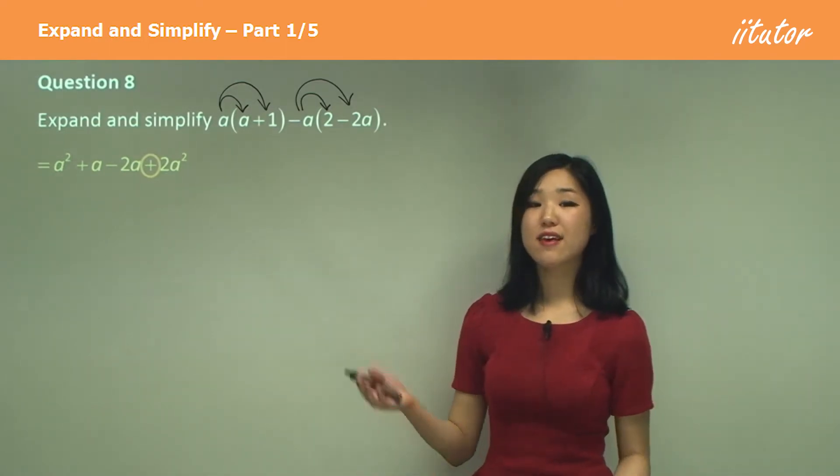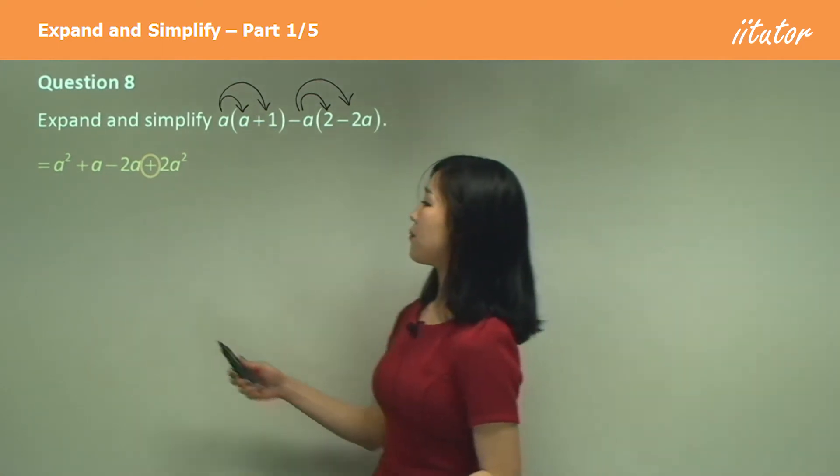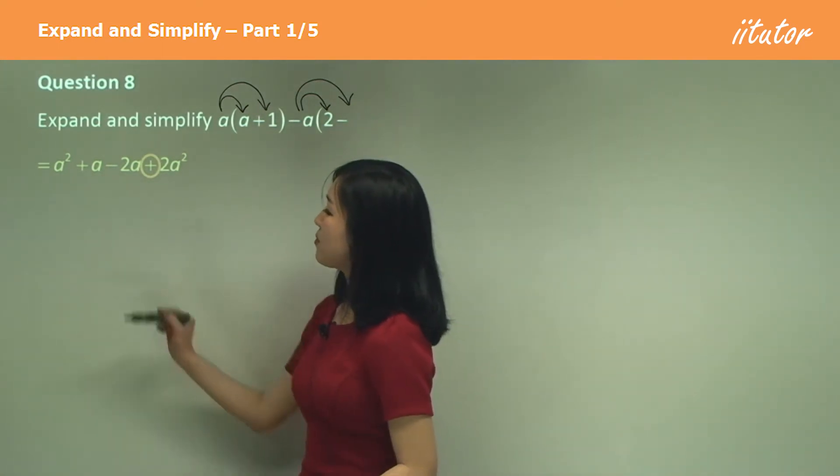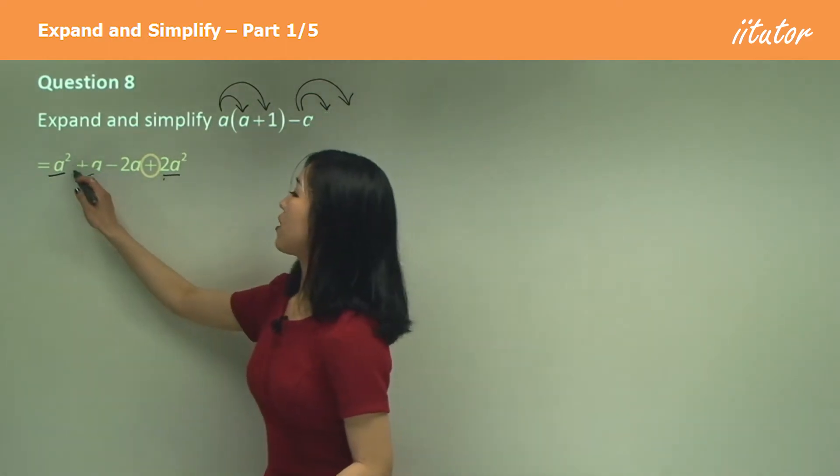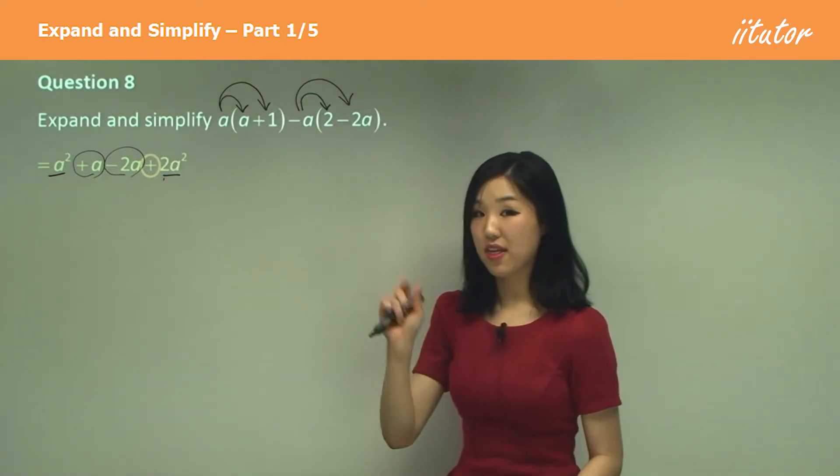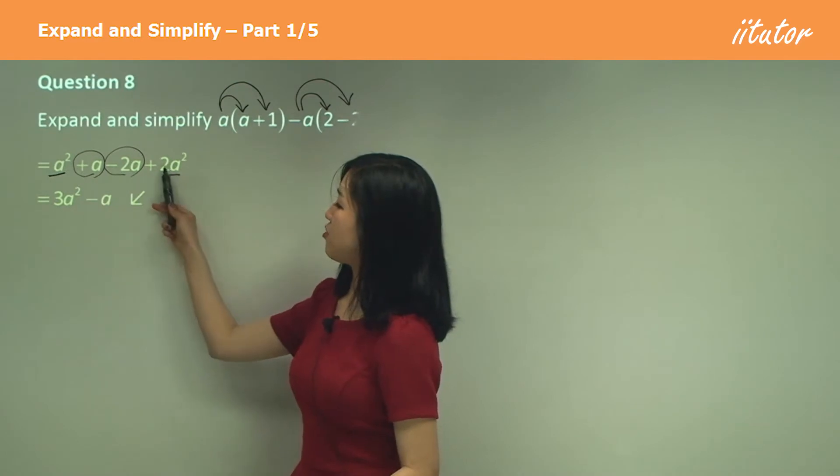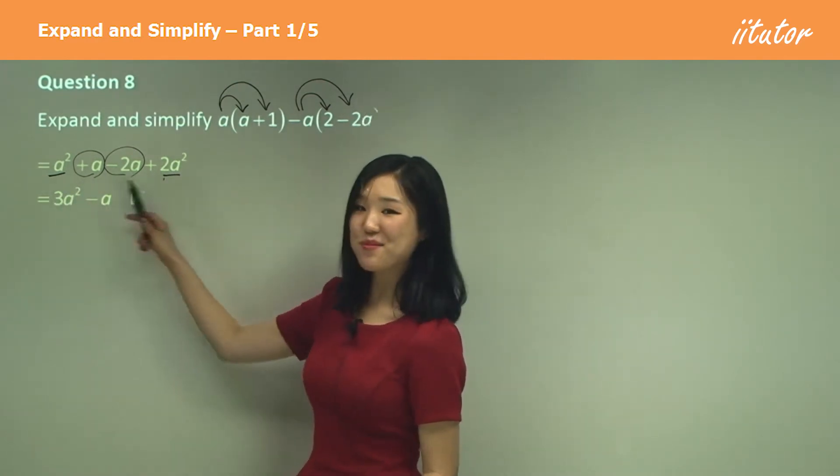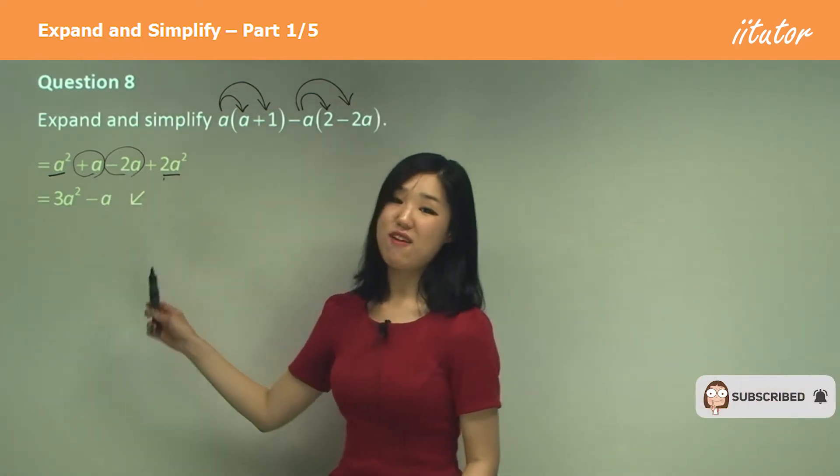Now all we need to do is gather up our like terms because that's how we simplify. So let's go to the like terms. See how a squared and we've got a squared here, and we've got an a and we've got a negative 2a. So we'll gather the common parts like this because a squared plus 2a squared is 3a squared and a minus 2a is negative a.